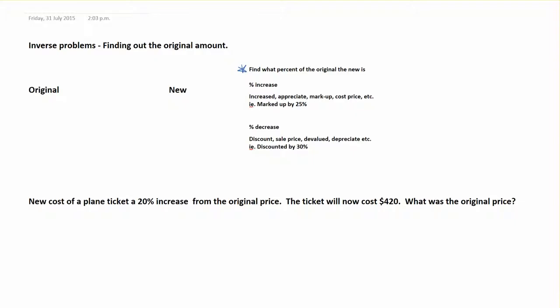If you increase by a percentage, think about doing 1 plus whatever the percentage is divided by 100. So you always end up with a decimal like a one-point-something — you get a 1.something that you fill in the blanks for.